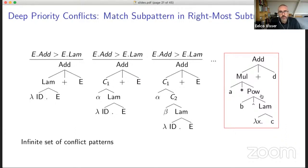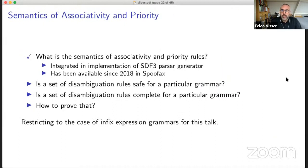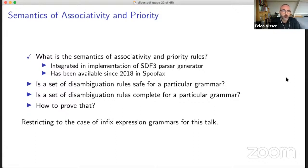That forbids a pattern where the lambda might occur on the rightmost edge of a left subtree of an addition, and this conflict will be detected with our new semantics. This leads to a semantics of associativity and priority that works for infix operators, prefix operators, and postfix operators — both with high and low priority. We've integrated this in an implementation of SDF3 in a parser generator, and it has been available in our language workbench for a while. It works for things like let bindings, lambdas, and functional constructs that have a low priority.